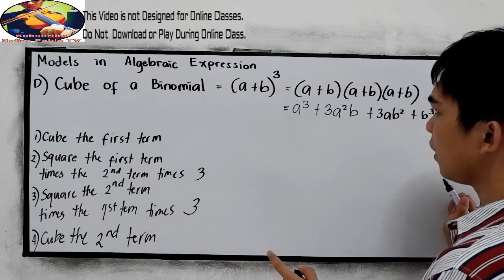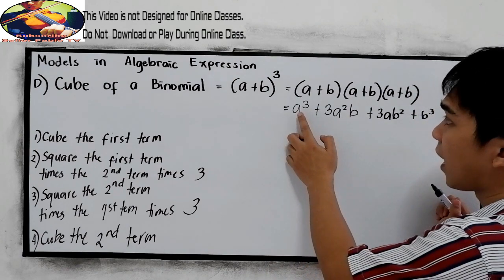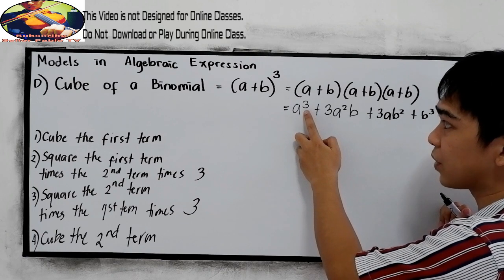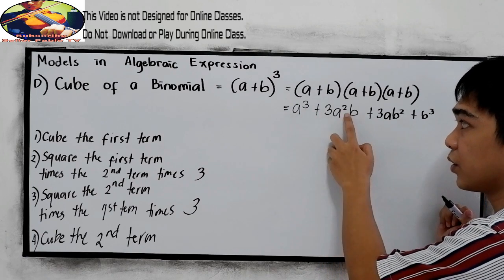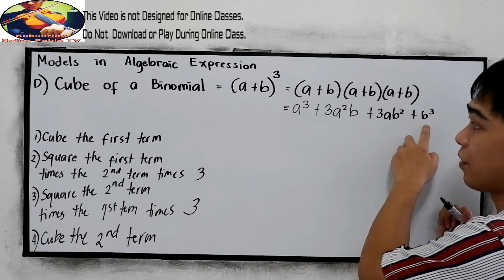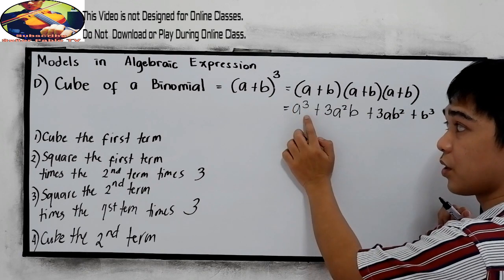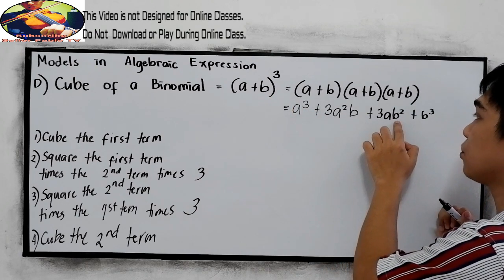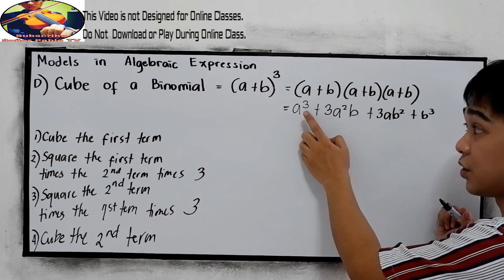Notice to check your answer: the first term's exponent decreases in order. So we have a cubed, a squared, then a raised to 1. And for b: b raised to 0 (no b), then b raised to 1, b raised to 2, and b raised to 3. The exponents are in increasing order.